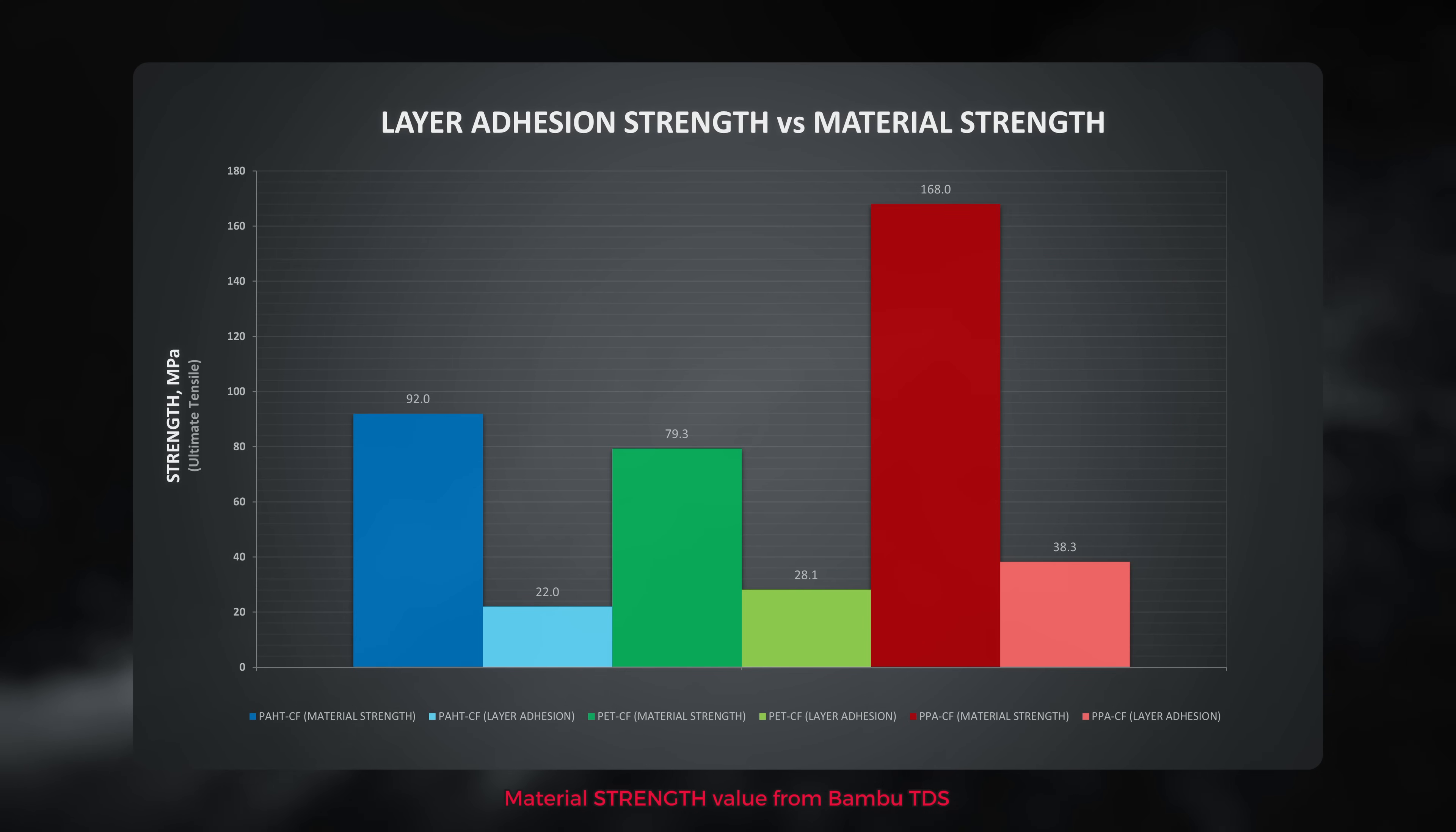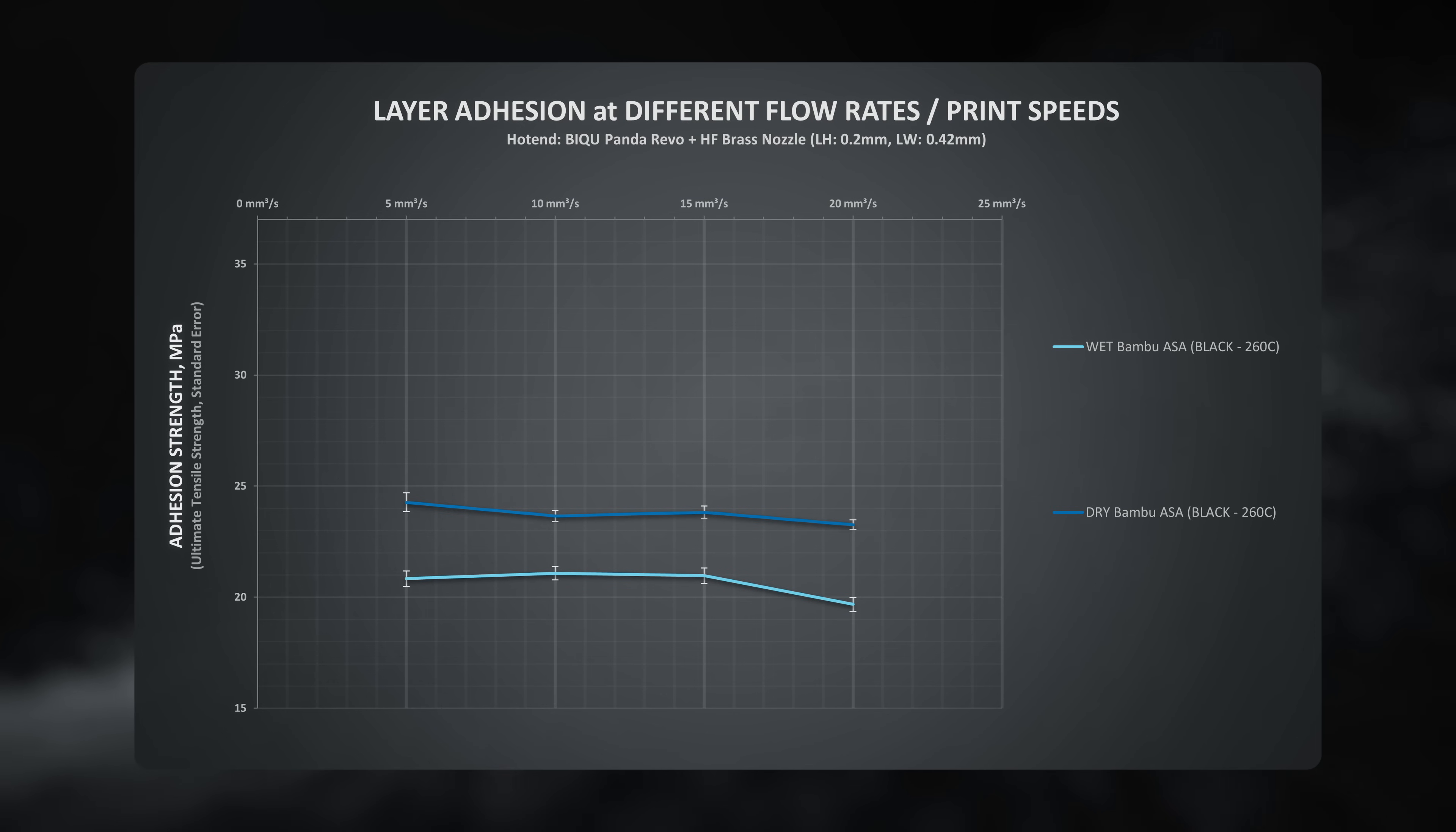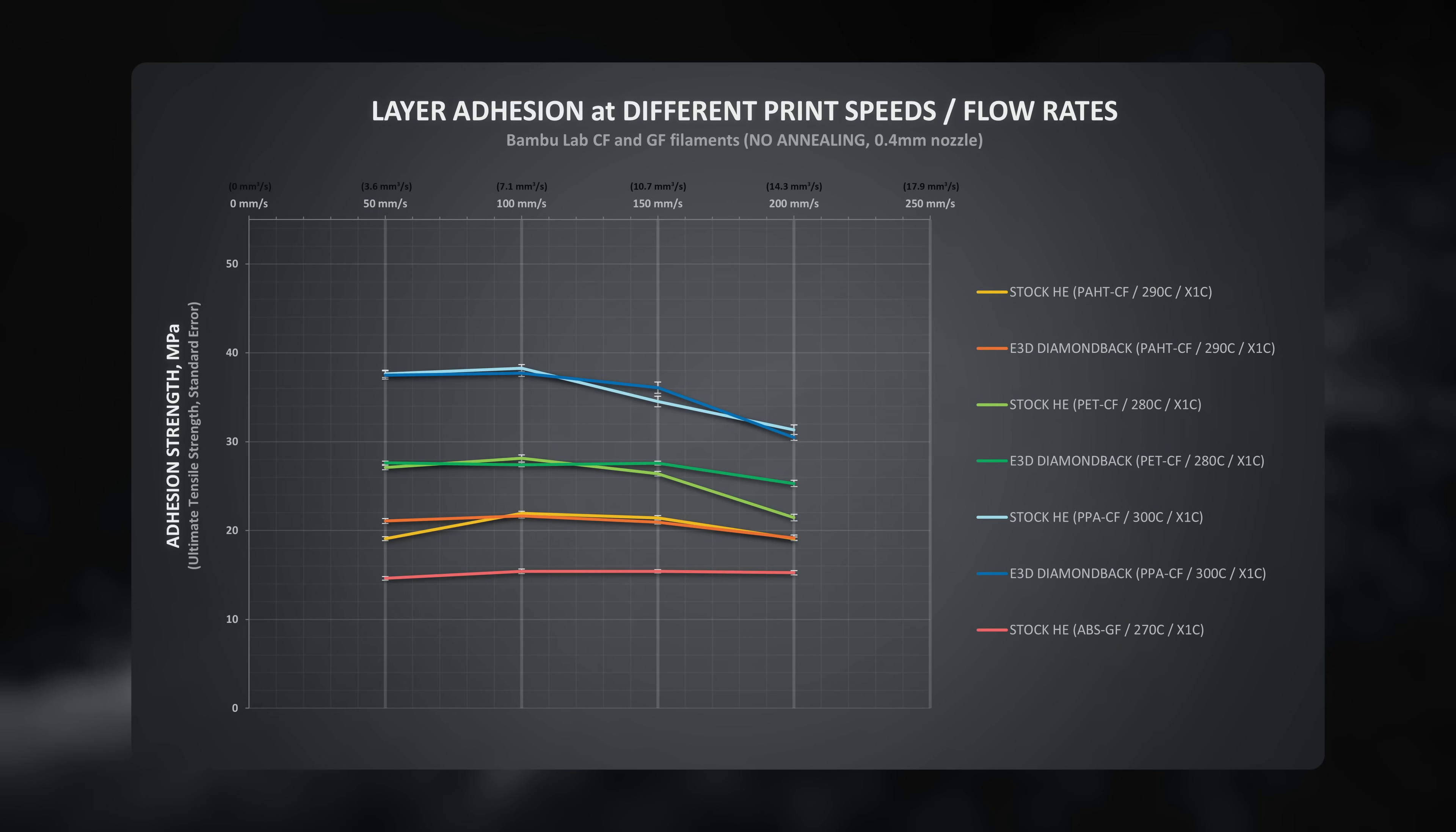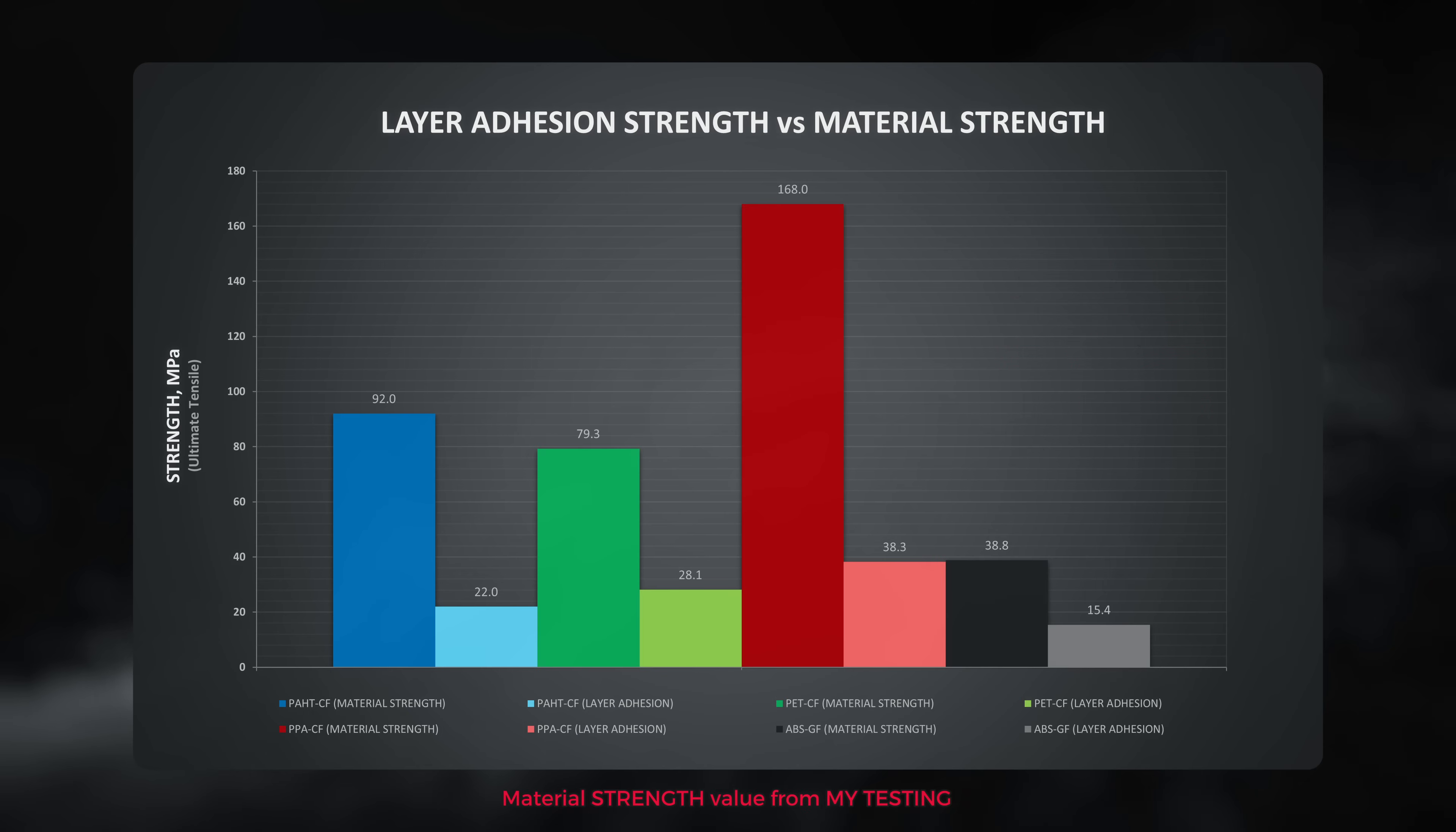I also tested a way more basic glass-filled ABS filament just to get more wear on each hotend. From my previous data and experience, regular ASA and ABS filaments don't have great layer adhesion in general. So when I saw how poorly glass-filled ABS performed, I wasn't really surprised. Breaking the vertically printed test samples and calculating the layer adhesion versus material strength ironically ended up being the best result so far just because the material itself is quite weak.